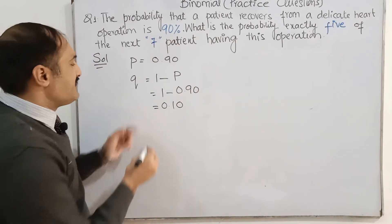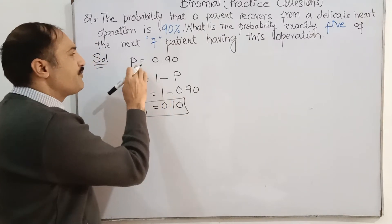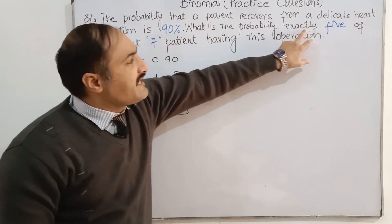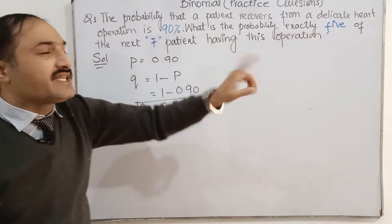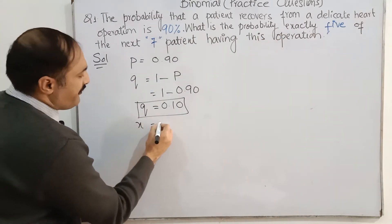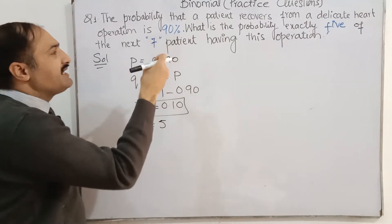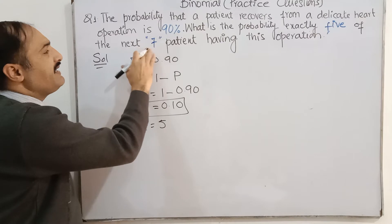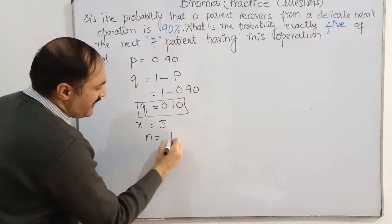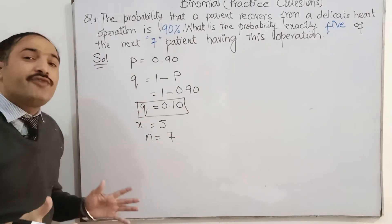And what is the probability of failure? Q is equal to 0.10. Probability of success is 0.90. What is the probability exactly 5 of the next? x is equal to 5. And next thing is, of the next total, n independent is 7 patients. Total n is equal to 7 patients. So here is the binomial formula.